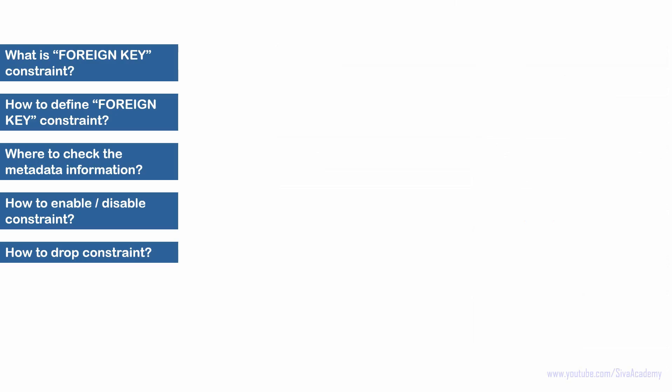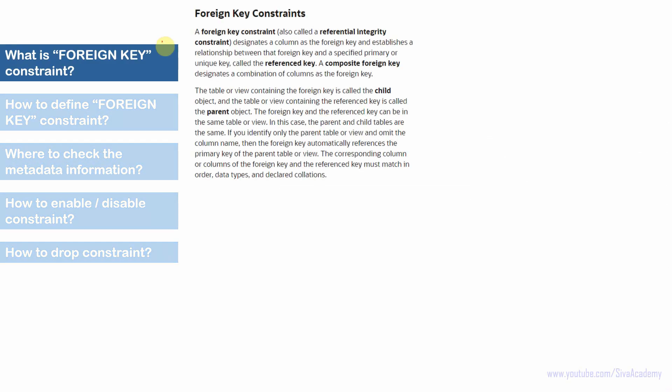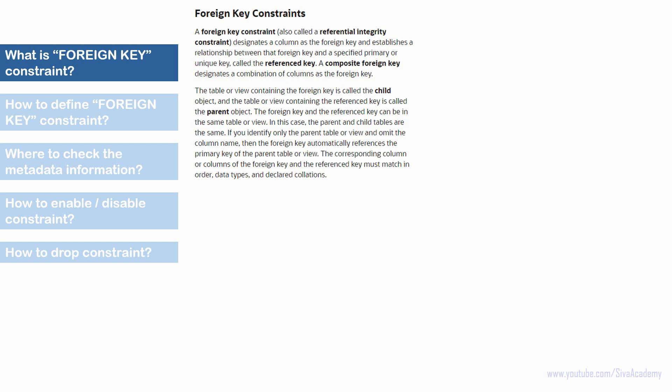To start with, let us understand what a foreign key constraint is. Here is a snippet from Oracle documentation. A foreign key constraint, also called a referential integrity constraint, designates a column as the foreign key and establishes the relationship between the foreign key and a specified primary key or unique key, called a referenced key. In a foreign key constraint we have two tables: the child table, which defines the foreign key, and the parent table, which contains the referenced column. Using a foreign key, whenever we insert a record into a child table, we can enforce whether it has referenced data in the parent table.